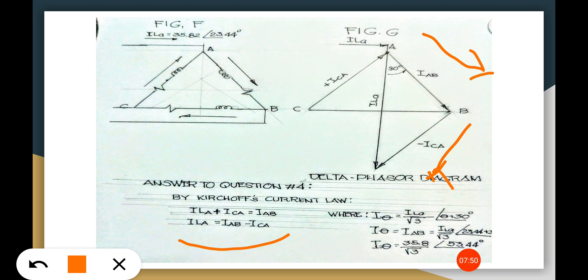And we have the load here. So what happens here is that this load ILa plus the Iab plus the negative Iaca.